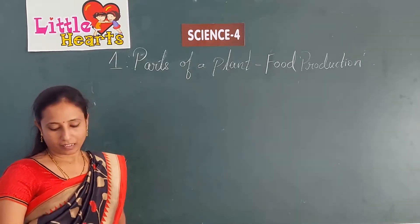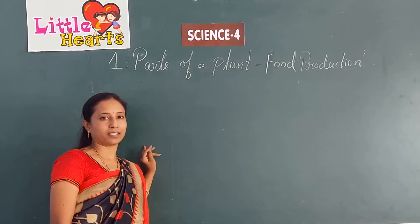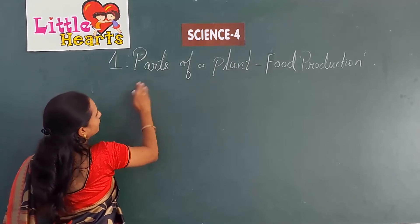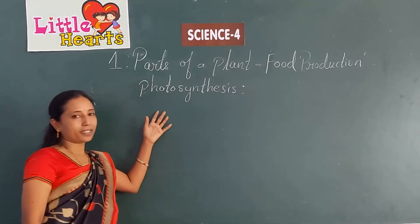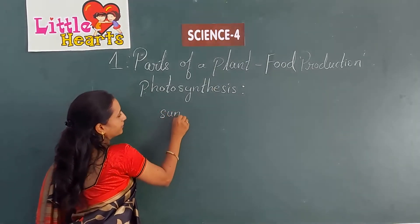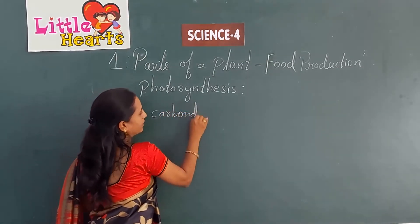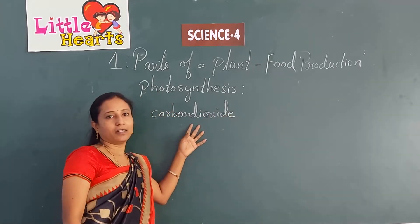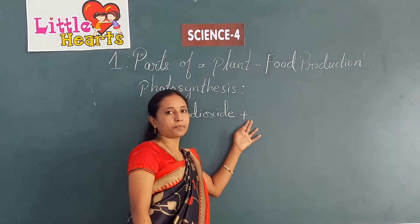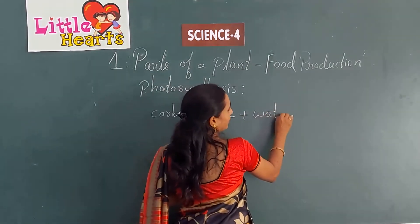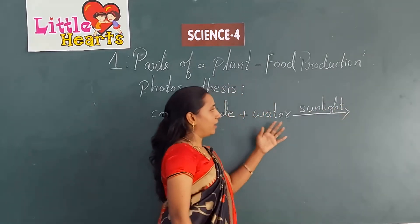Now, how do leaves prepare food for plants? Plants prepare food by a process known as photosynthesis. Plants absorb carbon dioxide from the air through the stomata, and they also absorb water through the roots. This happens in the presence of sunlight.